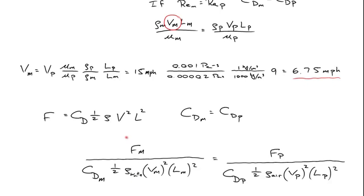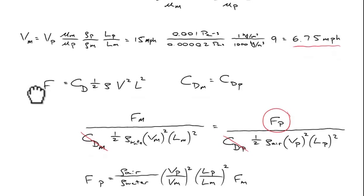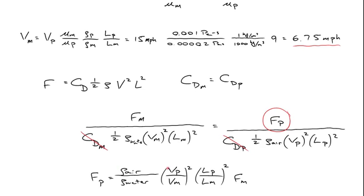I'll solve for the coefficient of drag for both the model and the prototype and equate those two. On the left is the drag force on the model measured in the laboratory, the density of water, the velocity of water flowing over the model, and the length scale of the model. Similarly for the prototype: the density of air, the velocity and length of the prototype both squared. Because we've maintained similitude, the Reynolds numbers are the same, so the coefficient of drag for both the model and the prototype cancel out. Rearranging for the prototype drag force, we just need the ratio of densities, the ratio of the two velocities, and the ratio of the length scales — which is nine squared — times the force of drag on the model.